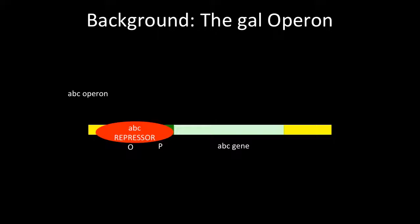So now you've seen how operons typically work. After several of that type of operon were discovered, some researchers discovered an operon that was very unusual. They found that the operon that codes for enzymes that metabolize the sugar galactose, the gal operon, has two operators instead of just one. They decided to call this new operator the internal operator, OI, and the other the external operator, OE.